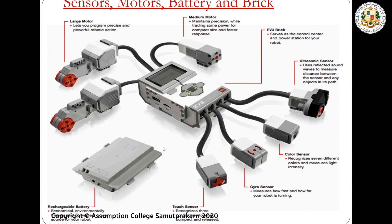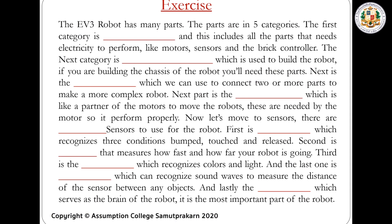These are the electronic parts of the robot. We have two large motors, which let you program precise and powerful robotic actions and are used to move the robot. We also have the medium motor. The brick controller serves as the control center or brain of the robot. The ultrasonic sensor uses reflected sound waves to measure distance. The color sensor recognizes different colors. The gyro sensor measures how fast your robot moves or runs. The touch sensor can feel when it's touched, bumped, or released. Finally, we have the rechargeable battery — without it, none of the electronic parts will work.